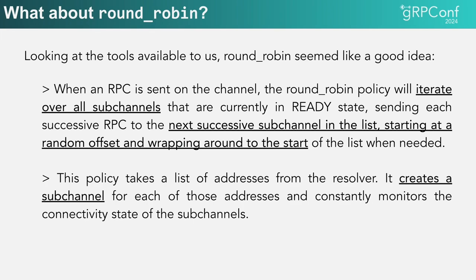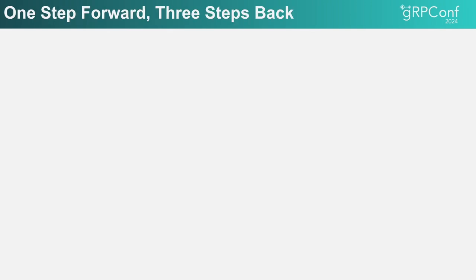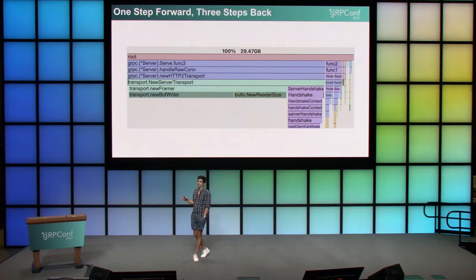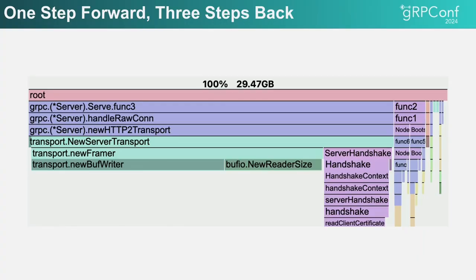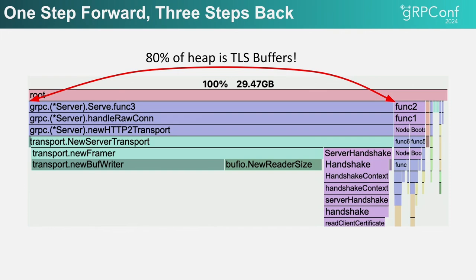That means hundreds of thousands of clients each opening connections to the couple dozen XDS control plane hosts we had. Suddenly, a couple of hosts inexplicably start running out of memory and crashing. I take a quick heap dump and see that about 80% of the overall heap is actually being used by effectively idle TLS buffers. We have the entire fleet connecting to just a couple of hosts, and we can't even scale it up — if we add a host, it adds an extra IP to the record and everybody connects to that host too, instantly running out of memory.